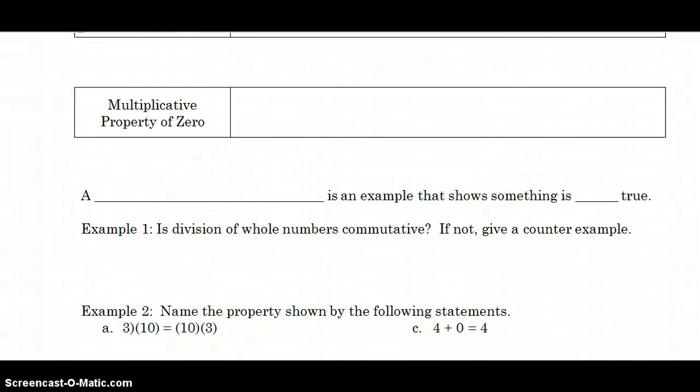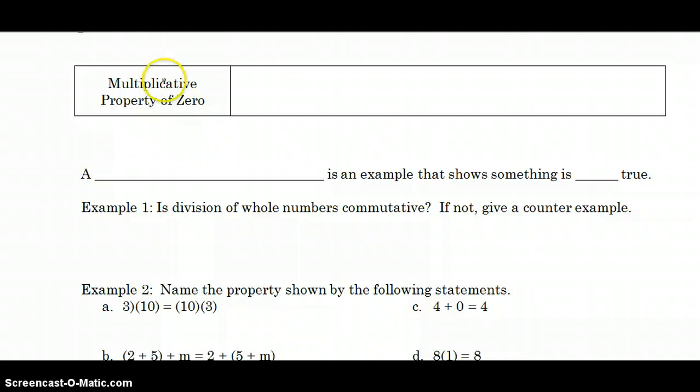Now, the multiplicative property of 0, there's no identity word in this expression. Multiplicative property of 0 is just saying anything times 0 is 0. And again, the commutative property, you could put the 0 first. 0 times A is still going to be 0.